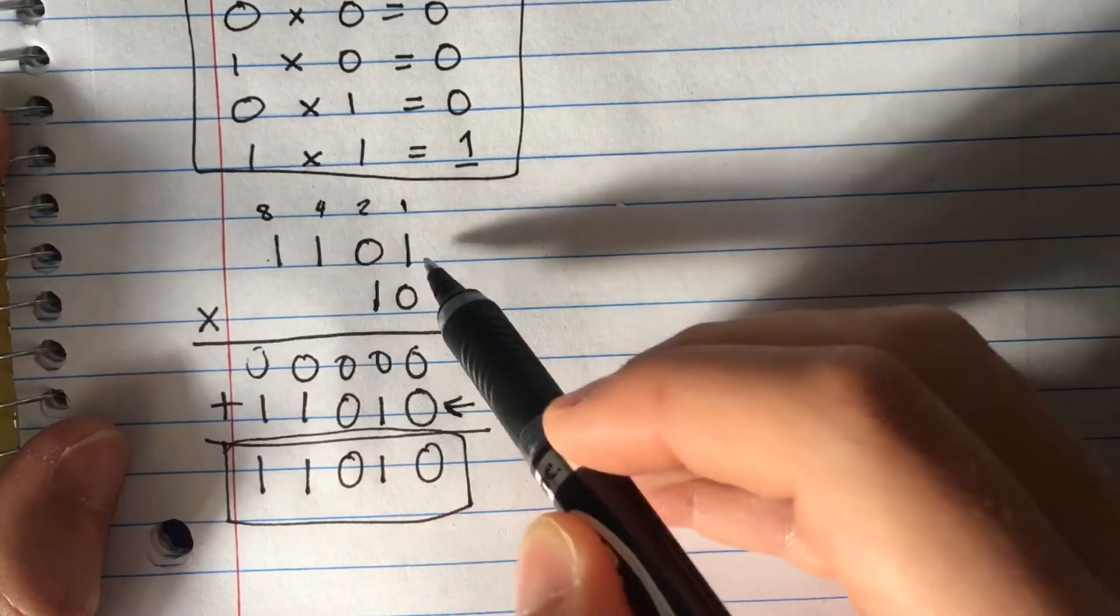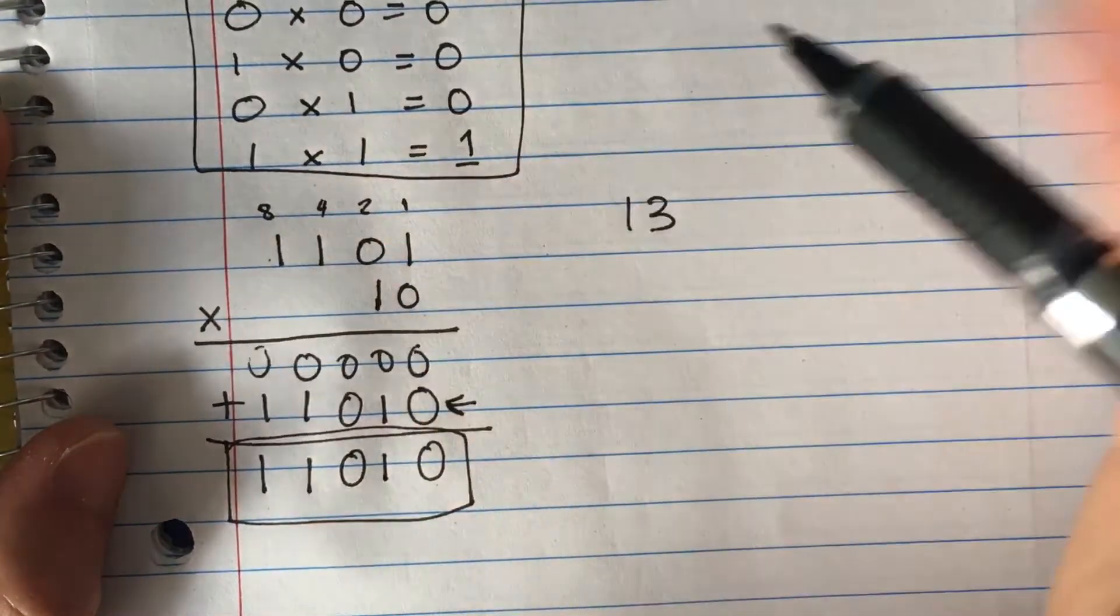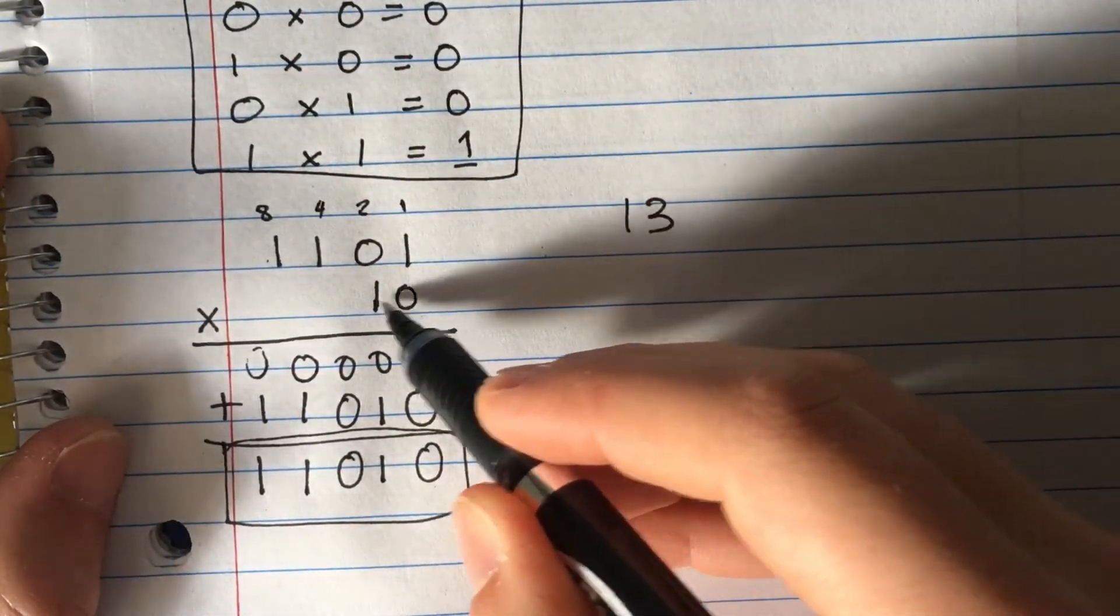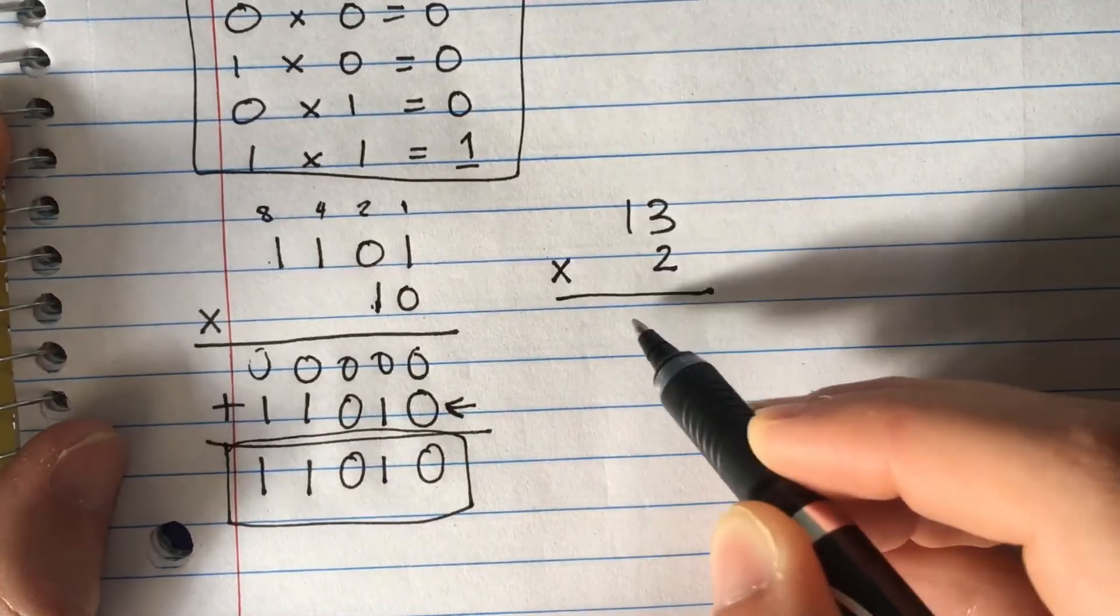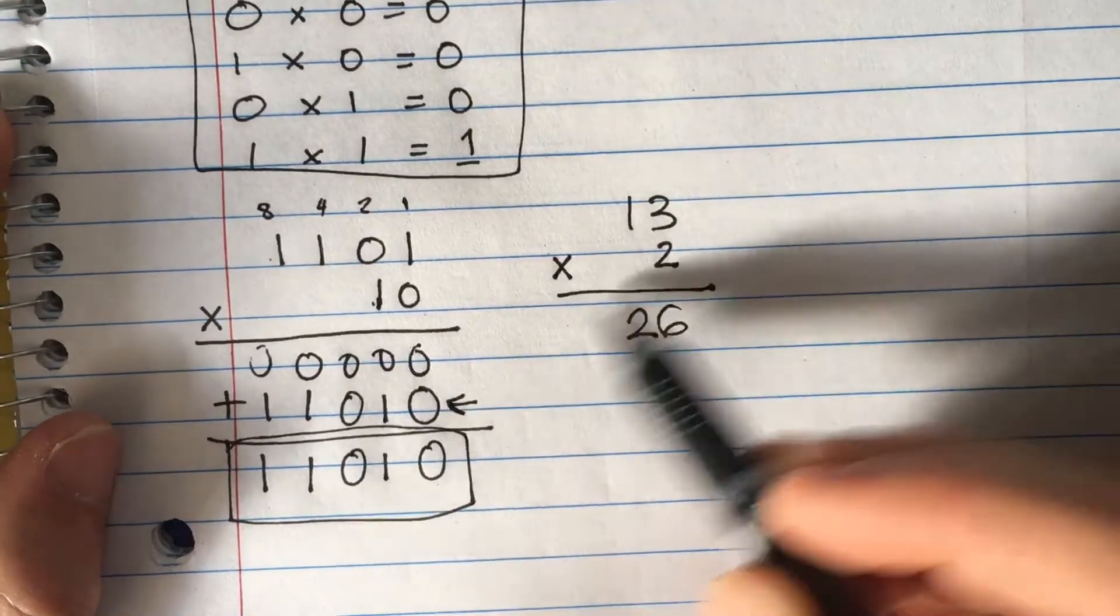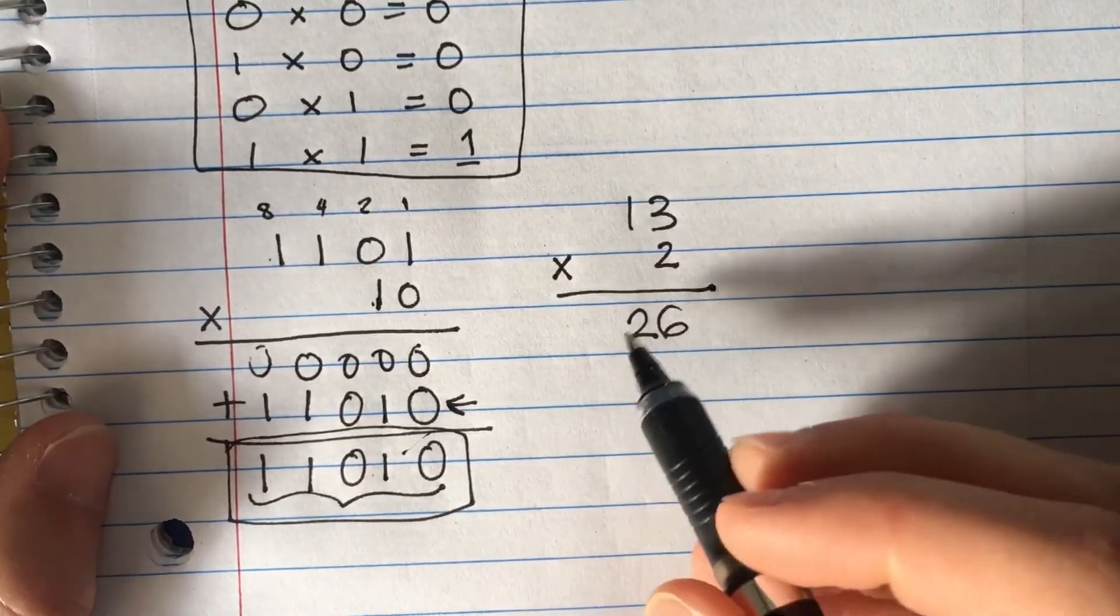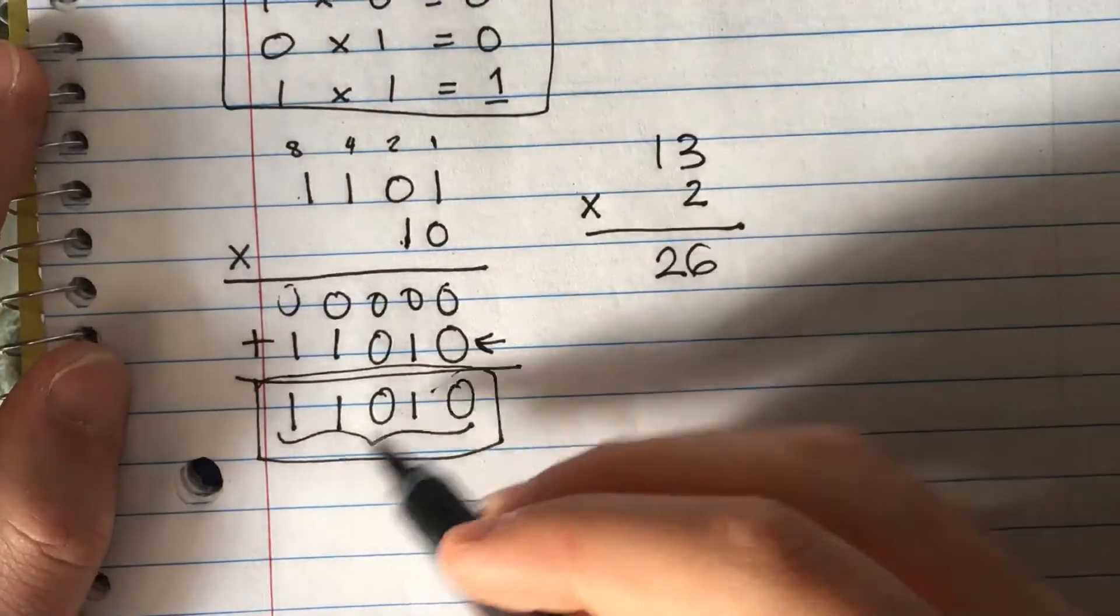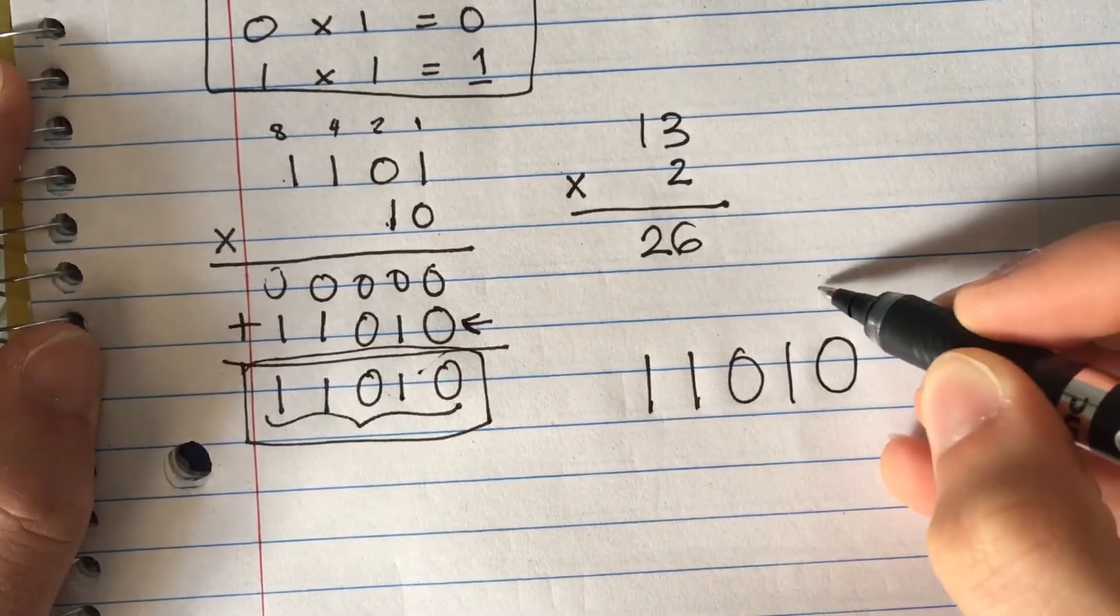We had 13, and the other number is 2 in decimal. So 13 times 2 equals 26. The number we got should be 26 in binary to be correct. Let me rewrite that number: 11010. This is the ones place, the 2s, the 4s, the 8s, and the 16s place.